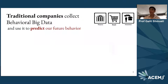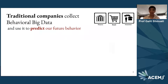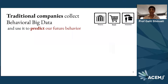Traditional companies such as banks, credit card companies, retailers, large supermarkets, and of course insurers have been collecting behavioral big data for a long time, even before we started using the term 'big data.' They've been using this data for multiple different reasons — one of them is to predict our future behavior. For example, insurance companies will collect your behavioral data in order to try and predict your risk, and then set your premium accordingly. Retailers will use it to offer coupons and things like that.